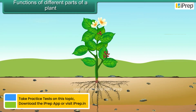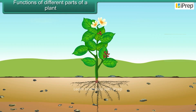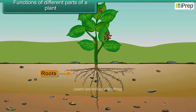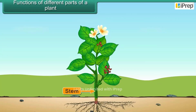Functions of different parts of a plant: Roots fix a plant to the soil and absorb water and minerals from the soil. The stem gives support to the plant and bears branches,